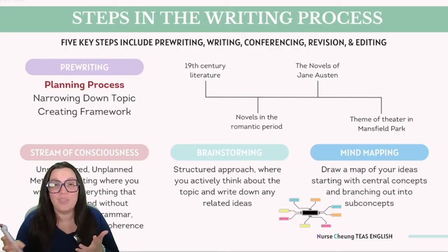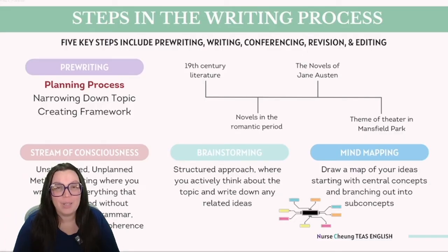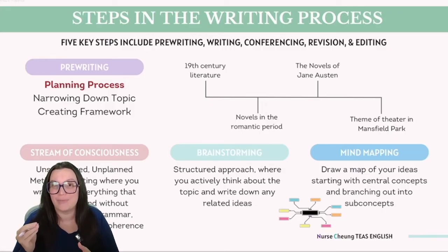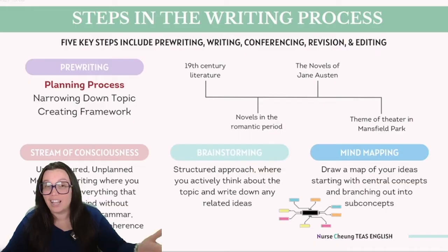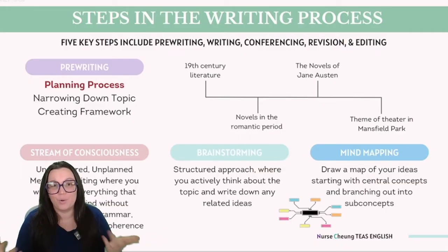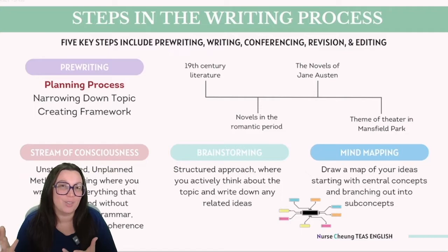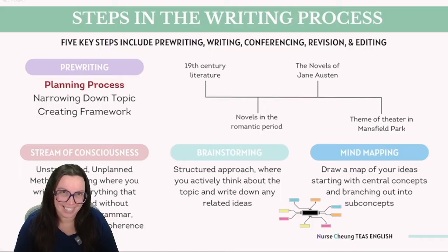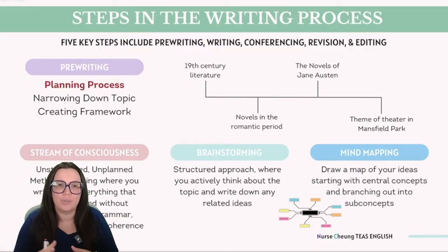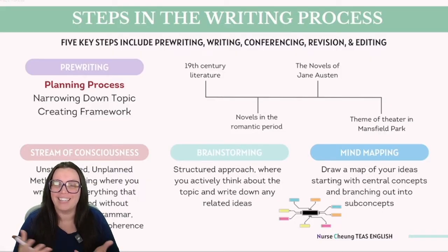Once all of that brainstorming is done, you can move on to mind mapping, which is an even more structured form of brainstorming that visually organizes that information. You can start with a central idea or theme and expand outwards in a radial fashion using lines, symbols, words, colors, and images that connect to the related idea. If you've ever done a vision board, this is kind of what mind mapping actually is. Mind maps are particularly useful in visualizing relationships between different aspects of a topic, making complex information easier to understand and navigate.